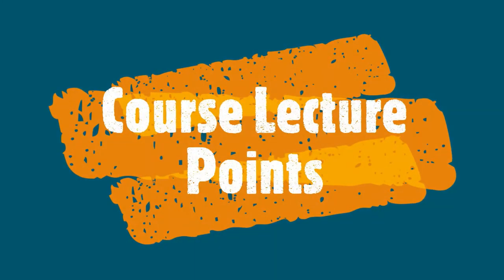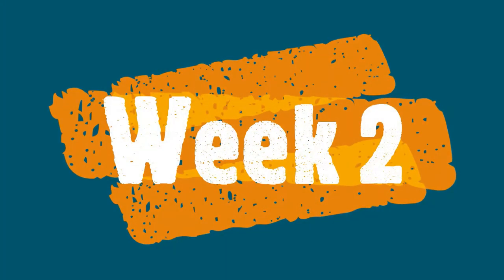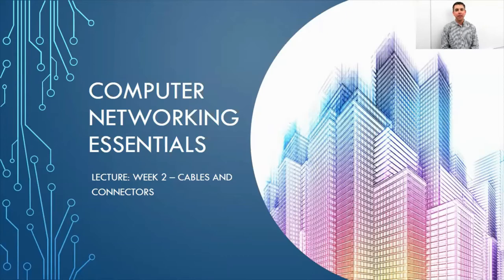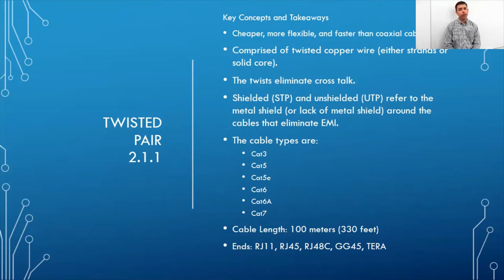Welcome to week two. In test out we cover cables and connectors. In section 2.1.1 they cover twisted pair — it's cheaper, more flexible, and even faster than coaxial cable.